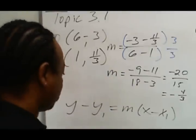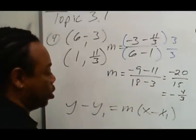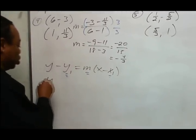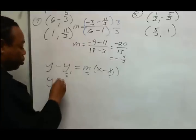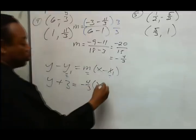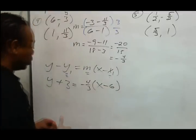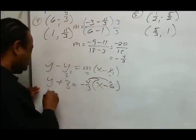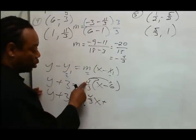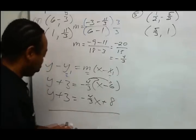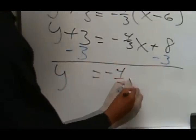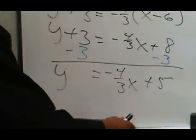Now we can fill in three values into the point-slope formula. The opposite of y is positive 3, the slope is negative 4 thirds, and the opposite of x is negative 6. Distributing negative 4 thirds, we get y plus 3 equals negative 4 thirds x — and 6 divided by 3 is 2, times 4 is 8 — so positive 8. Then subtracting 3 from both sides gives y equals negative 4 thirds x plus 5. That's the linear equation that goes through these two points.